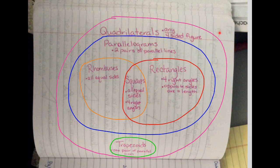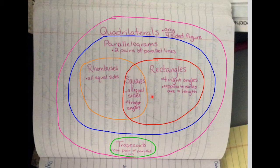This is going to be another way to represent what we did on page 38, just to see it in another way so that you can realize all of these shapes are quadrilaterals. Trapezoids are the only one with one pair of parallel lines. All of the others have two pairs of parallel lines, but rhombuses and squares have all equal sides, and squares also have all four right angles, and so do rectangles.